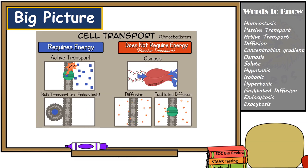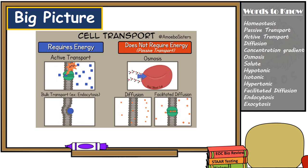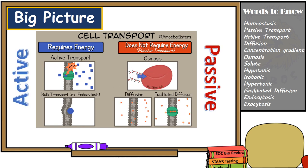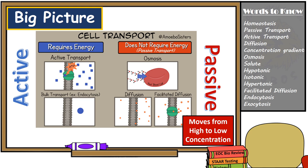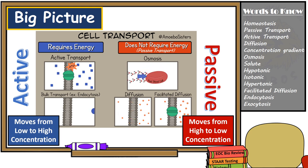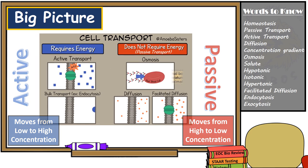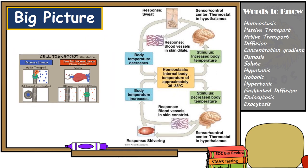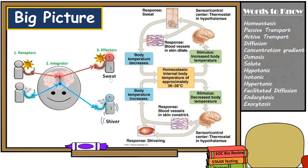Homeostasis is maintained by individual cells through the control of transport of materials into and out of the cell membrane through passive and active transports. Passive transport does not require energy to move materials with the concentration gradient. Active transport does require energy because it moves materials against the concentration gradient. Cells must maintain homeostasis, but multicellular organisms must also maintain stable conditions within the entire organism, requiring an integrated response from many cells in many organs and organ systems — cells, organs, and organ systems all work together to maintain homeostasis.